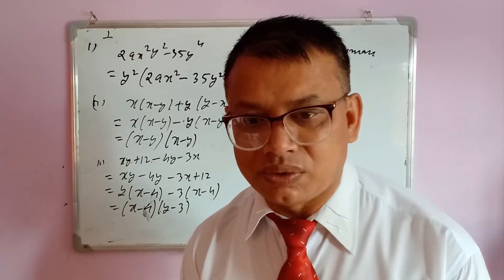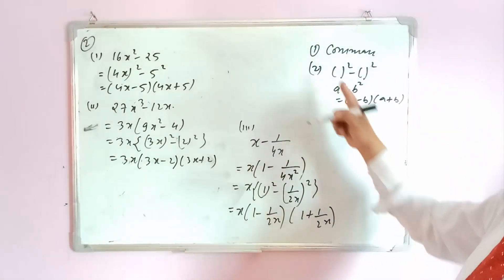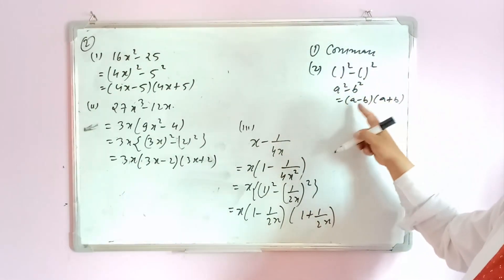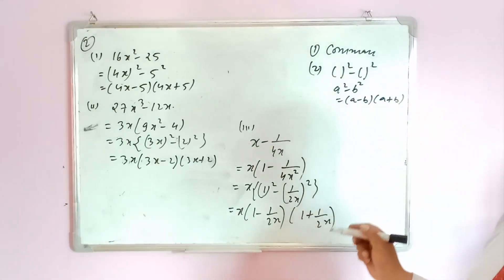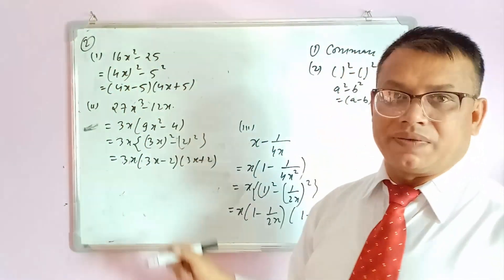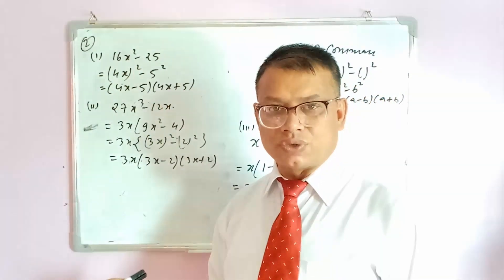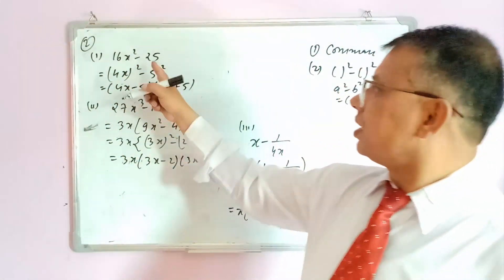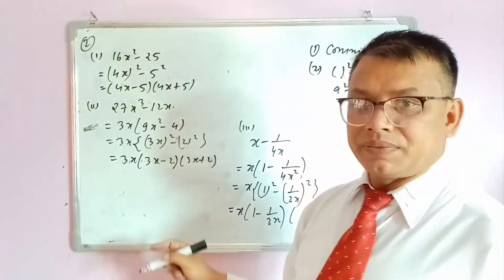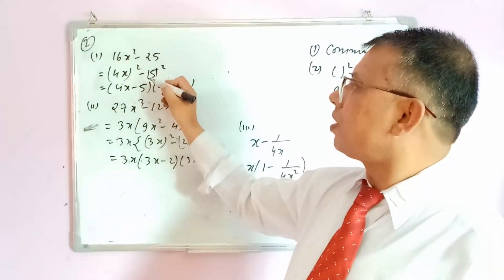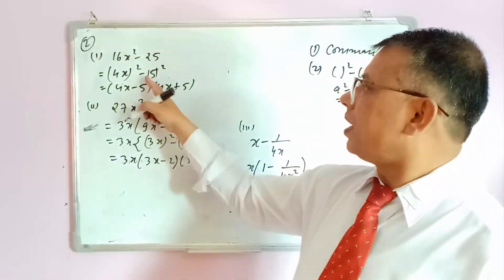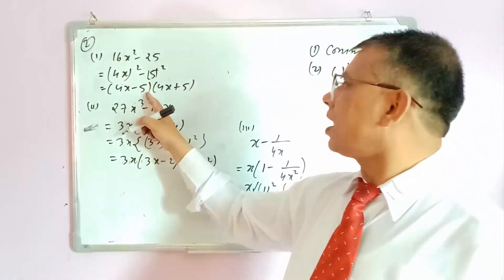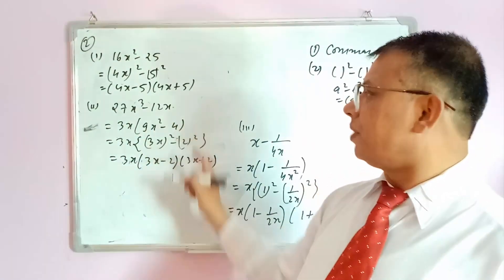Rule number two: the form a²−b². The formula is a²−b² = (a−b)(a+b). First question: 16x²−25. We write 16x² as (4x)² and 25 as 5². So applying a²−b² formula, the answer is (4x−5)(4x+5).